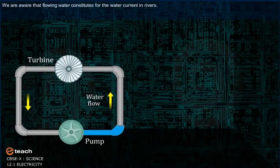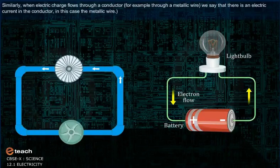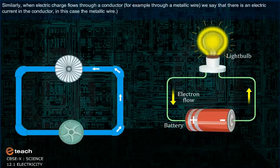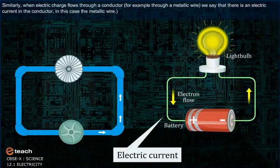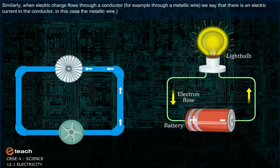We are aware that the flowing water constitutes water current in a river. Similarly, when electric charge flows through a conductor, for example, through a metallic wire, we say there is an electric current in the conductor — in this case, the metallic wire.